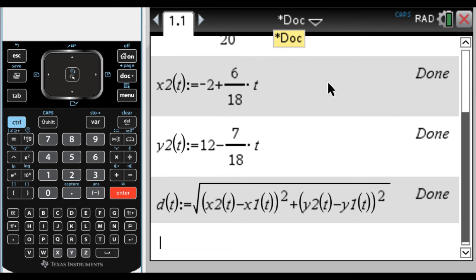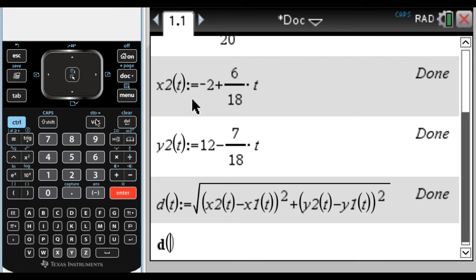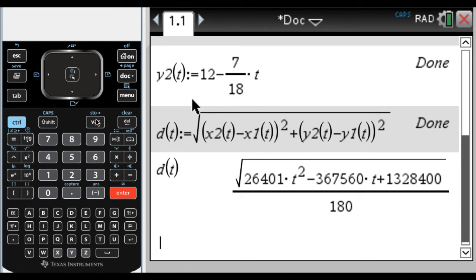It says done. So if you want to see what the distance formula looks like, you can now, we can use the var key, or you can just type d. So var key d(t), so you get that. So that's the equation. It's not super useful if you had to evaluate it by hand. But if I plug in one, I'm going to put in a decimal here to get a decimal answer back.